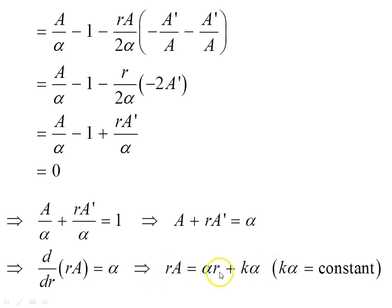Anti-differentiate that. We have rA = αr + this. Now this is just a constant, k times α. k times α is just a constant. And we just choose that way for convenience, as you'll see on the next page.